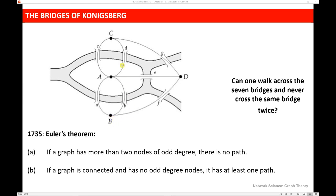We can see looking at this graph that that is what we have, because nodes B and C have three connections coming out of them, as well as node D. In fact, every single node in the graph is of odd degree, and if you try to trace over the bridges, you can see that you can't really solve the problem. He also showed that if a graph is connected and has no odd degree nodes, that it has at least one path.